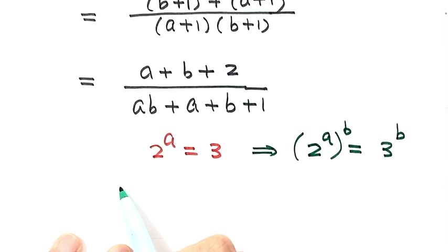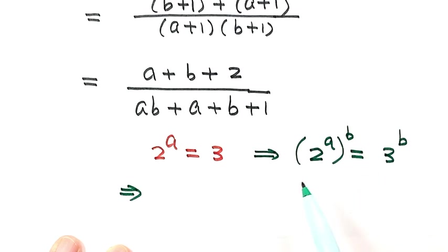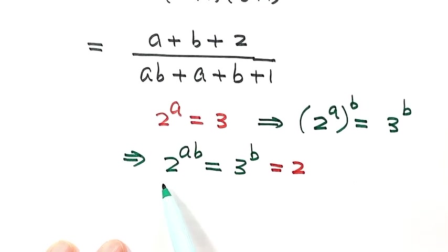Let's simplify. Then here 2 to the power of ab just equals 2 to the power of a times b, then equals 3 to the power of b. Then based on the second given condition, 3 to the power of b equals 2. So now you see here, then we have 2 to the power of a times b equals 2.